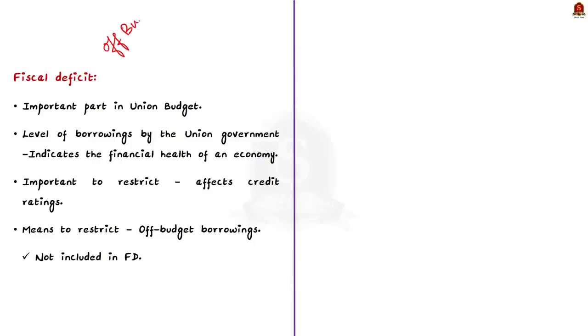One of the most important part in any union budget is the level of fiscal deficit. What is fiscal deficit? It is the gap between what the central government spends and what it earns. So, it also includes the level of borrowings by the union government. Now, this number of fiscal deficit is the most important metric to understand the financial health of any government's finances.